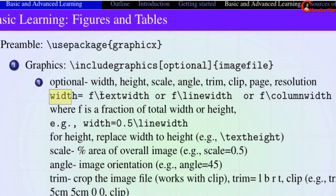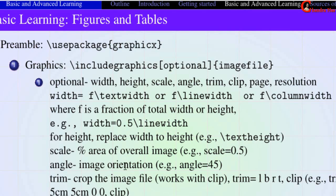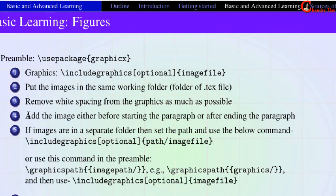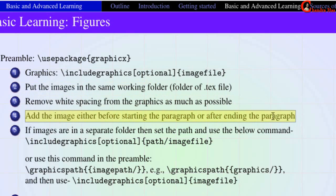We can also write a height argument and set text height. We can reduce the size with the scale argument — for example, scale=0.5 means the image area will be reduced to 50% of the total area. We can rotate the image using the angle argument, and crop it with the trim argument: trim = left bottom right top, plus the clip option. Also, put the image in the same working folder, crop any white spacing, and add the image before or after a paragraph.